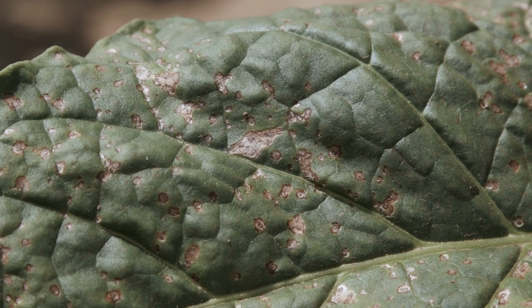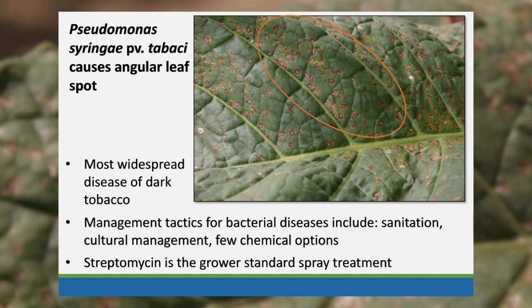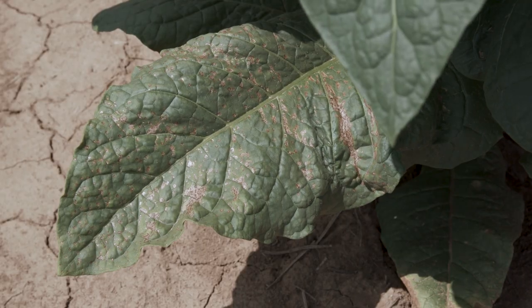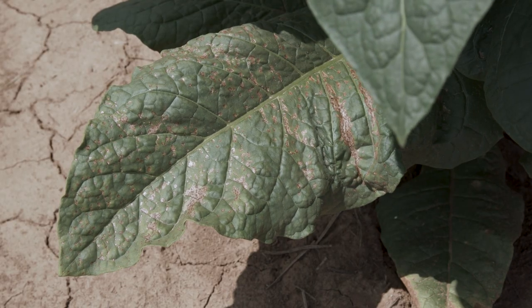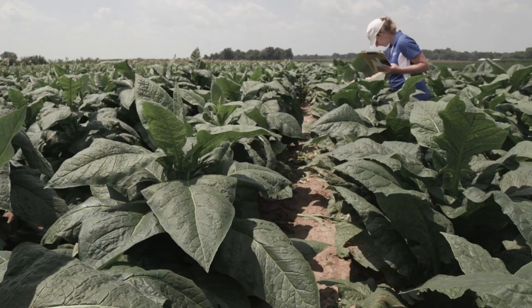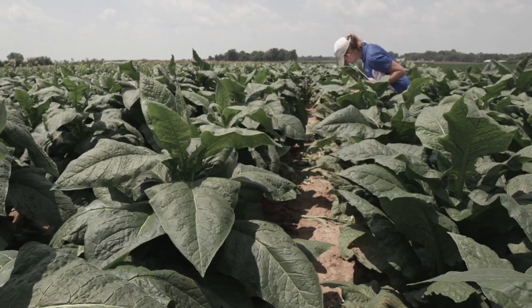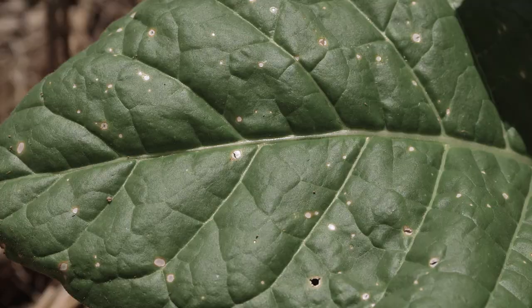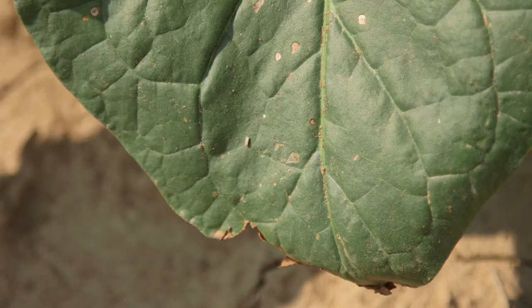Angular leaf spot is the most significant foliar disease in dark tobacco. It is caused by a bacterial pathogen, Pseudomonas syringae pathovar tabassi. That Pseudomonas pathogen is very different from a lot of the fungal pathogens that we work with that cause fungal leaf spots in tobacco.